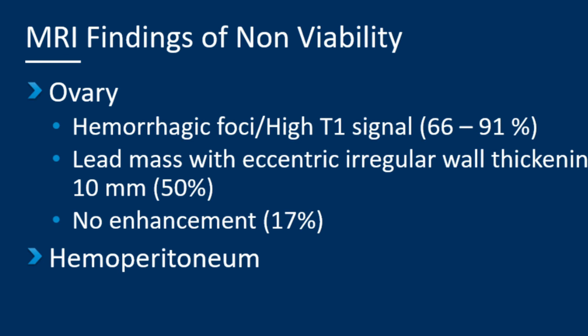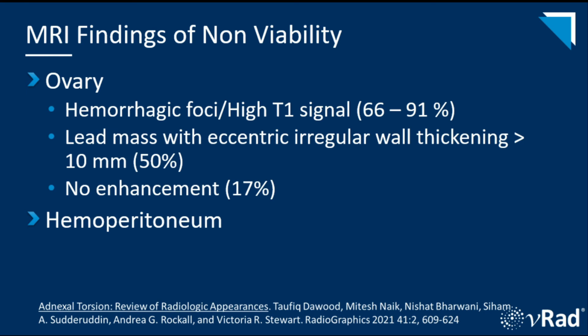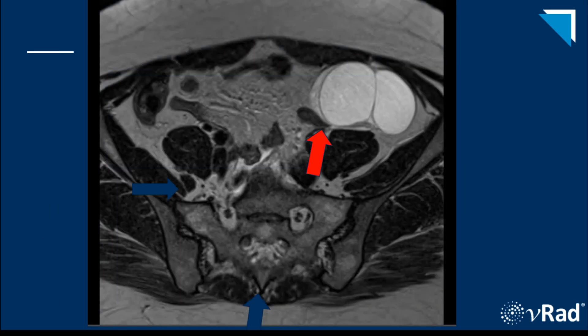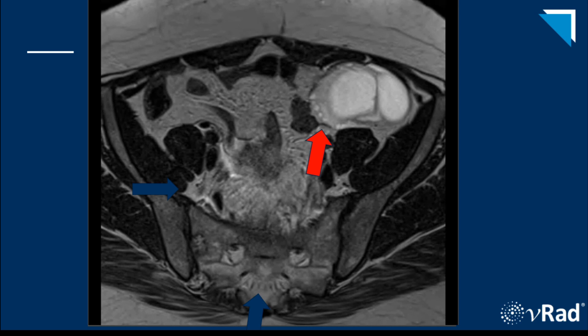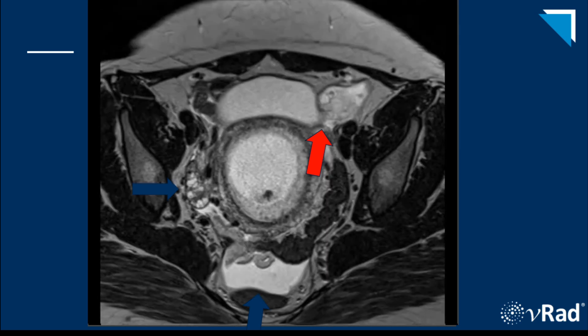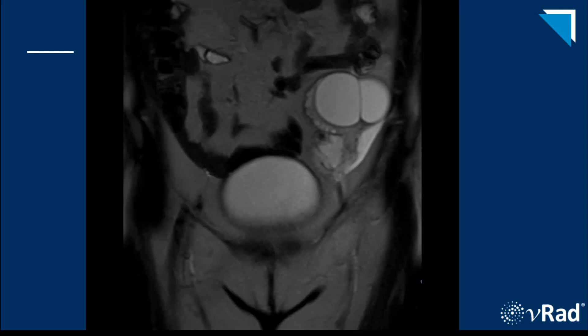A hemorrhagic ovary is a non-viable ovary. On MRI, hemorrhagic foci manifest as high T1 signal, seen the majority of the time, along with a lead point mass with eccentric wall thickening greater than 10 mm in approximately half the cases, and lack of enhancement. Hemoperitoneum is again associated with non-viability. These T2-weighted axial images show the left ovary massively enlarged containing large simple-appearing cysts, with dependent free fluid and a normal-sized right ovary. The coronal images clearly show the twisted left adnexal pedicle, leaving no doubt that this is adnexal torsion.